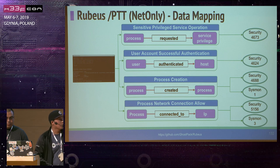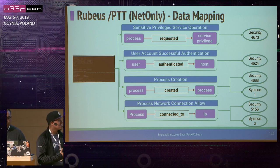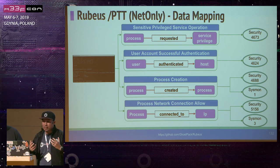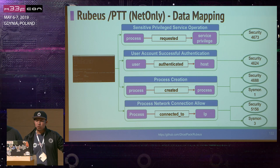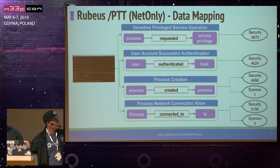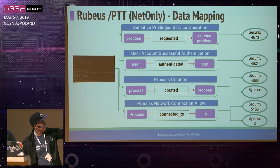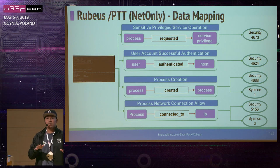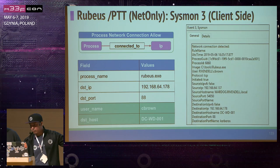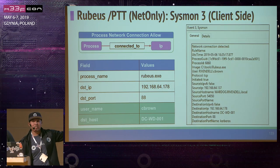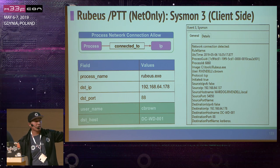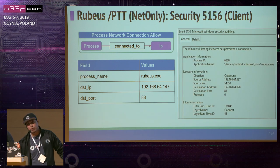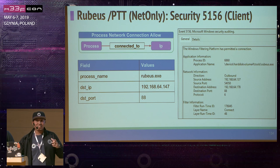From the Rubeus behavior, we can map specific actions: successful authentication locally with logon type 9 with new credentials; Rubeus creating a process; Rubeus connecting to the domain controller; and Rubeus handling the whole Kerberos authentication. We can map that to specific events. One interesting piece: Sysmon event ID 3 and security event ID 5156 — I've seen clients saying they don't need Sysmon because Sysmon is doing it all. But Sysmon gives you the username and destination host; with 5156 you don't get that information. If you're stacking user values, 5156 won't be your friend.